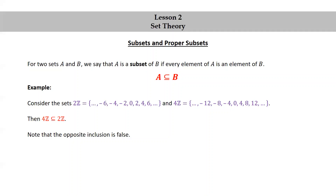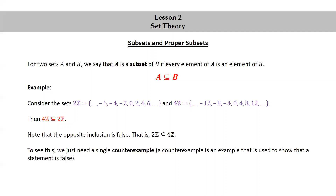Note that the opposite inclusion is false. That is, 2Z is not a subset of 4Z. To see this, we just need a single counterexample. The counterexample is an example that is used to show that a statement is false. Well, we have 2 is in 2Z, but 2 is not in 4Z.